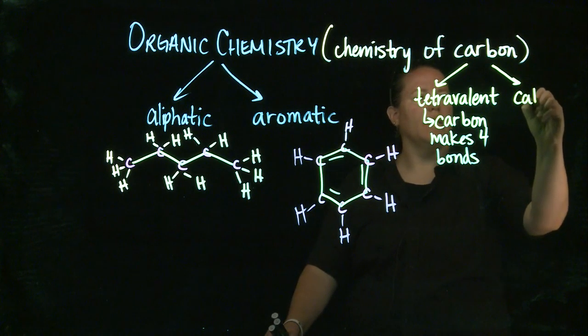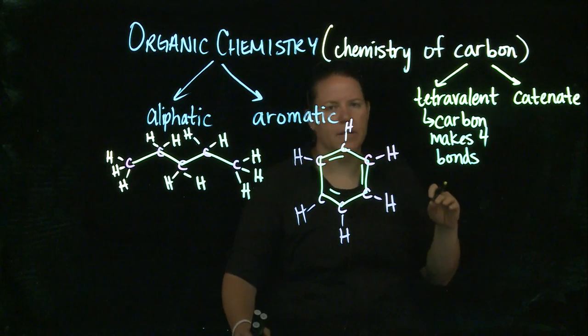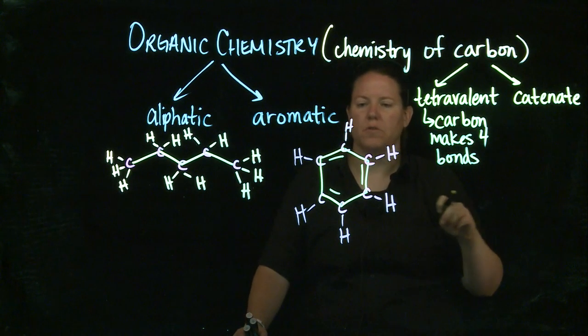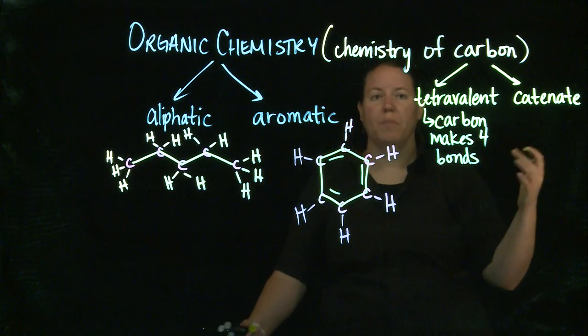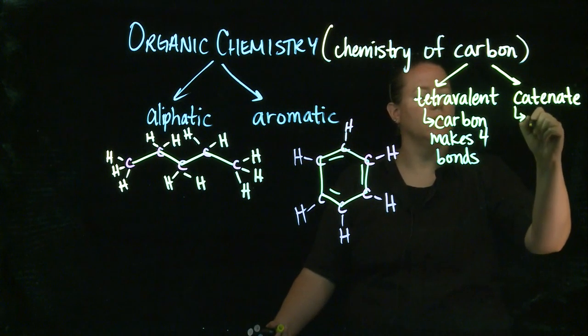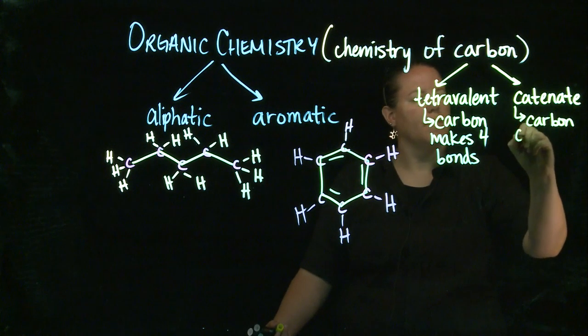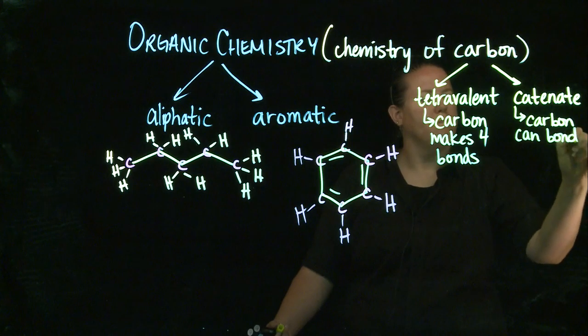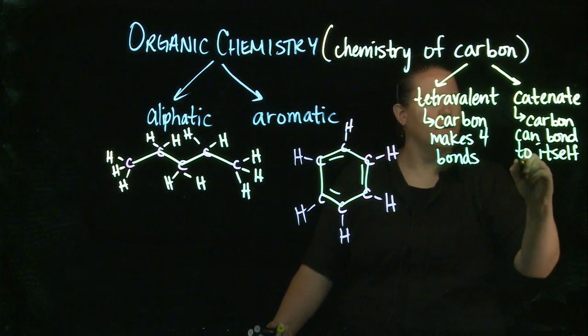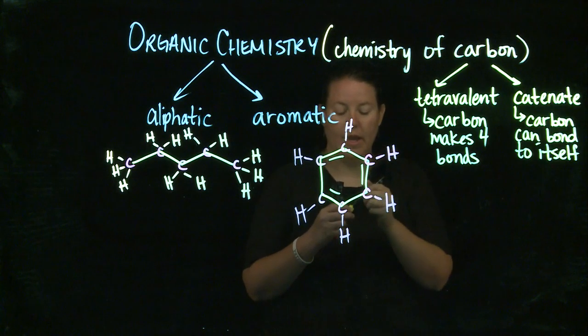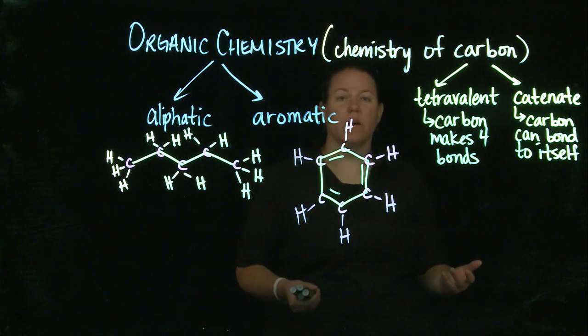It's tetravalent and it can catenate. What is catenation? Catenation is this really fancy schmancy term, which just basically describes what's happening here or here. Carbon has the ability to bond to itself. And it can do that over and over and over again.